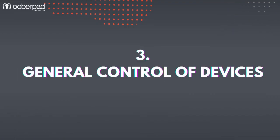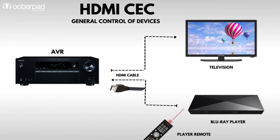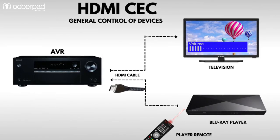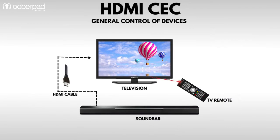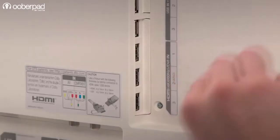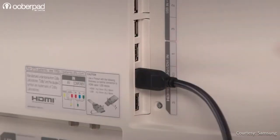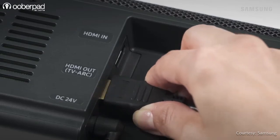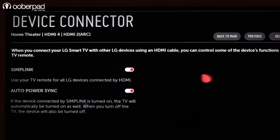Third, general control of devices. For example, the volume buttons on the player's remote control can control the volume of the TV. And if a sound bar is connected, the display's remote controls its volume, not the built-in speaker. In the case of the most complete implementation of this function, the TV remote should be fully able to control the media player and other CEC compatible devices.